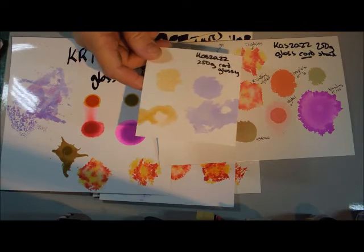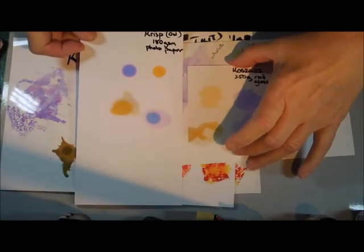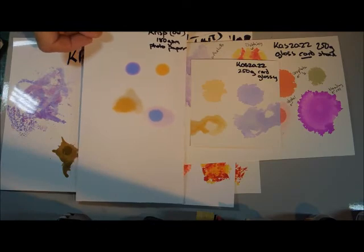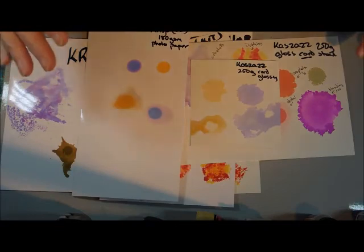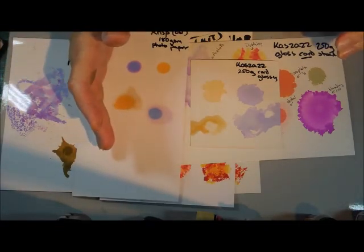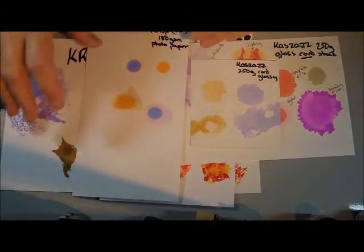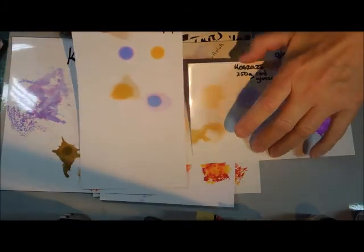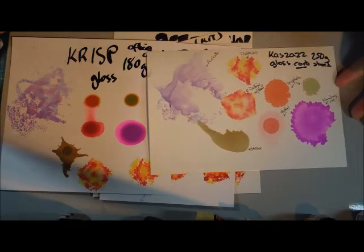There's our little test pieces that have dried. Alcohol ink does not take long to dry. But you can see the results are quite different when you're just dropping. So I would say perhaps don't use photo paper for any technique where you're dropping it on and wanting it to move with solution. Definitely use it if you're going to do pouncing, straw blowing, anything like that.